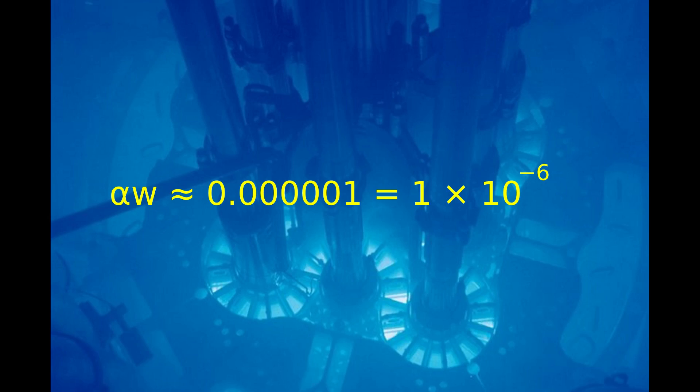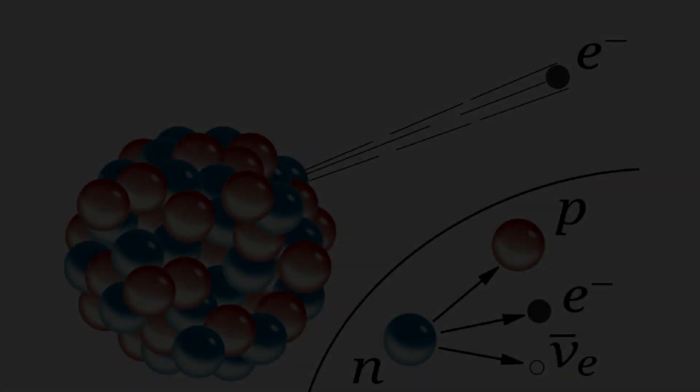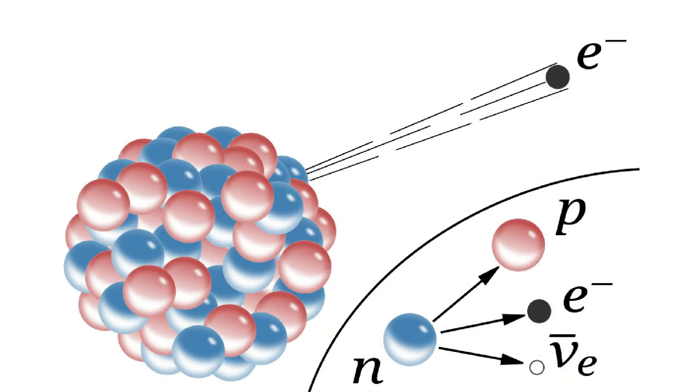Alpha sub w is approximately 0.00001 or 10 to the power of minus 6. Unstable particles such as neutrons, muons, and pions spontaneously convert or decay into other particles. For example, in beta decay a neutron decays into a proton, electron, and neutrino.